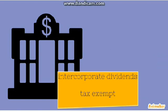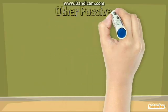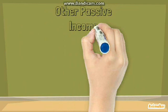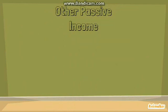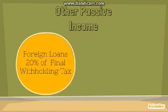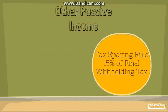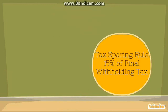For other passive income of non-resident foreign corporations, interest income from foreign loans is subject to 20% final withholding tax. The tax sparing rule — which applies to intercorporate dividends from a domestic corporation to a non-resident foreign corporation — is also subject to 20%.